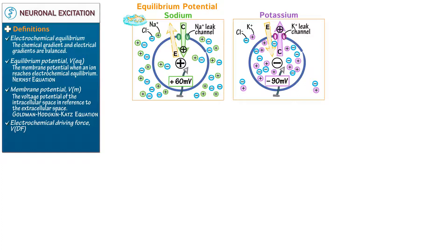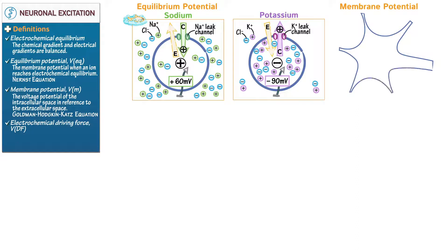Draw a neuronal cell body. Show that sodium has a high extracellular concentration and a low intracellular concentration. Indicate that sodium enters the cell via leak channels down its concentration gradient and include the opposing electrostatic gradient.